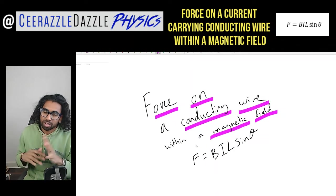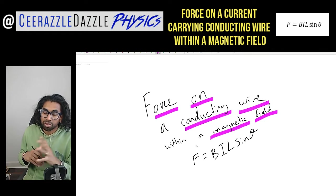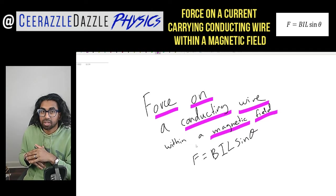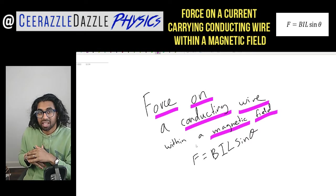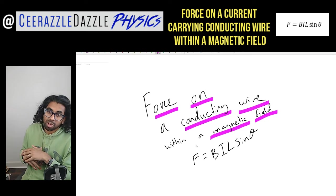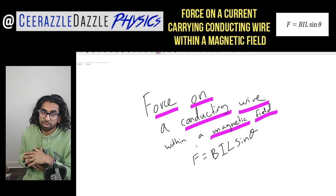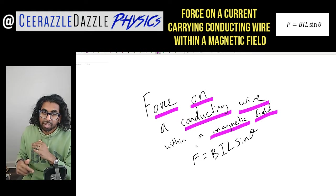Hey everyone, welcome to another session of Razzle Dazzle Physics. In today's session we'll be talking about the force on a conducting wire within a magnetic field, using the formula F = BIL sine of the angle theta. Before we get going, make sure you hit the like and subscribe button to keep the channel going and keep the content as free as possible.